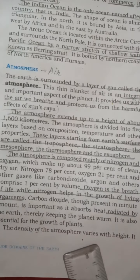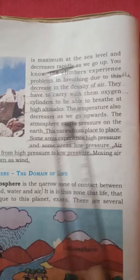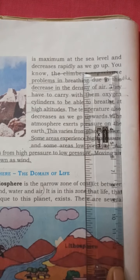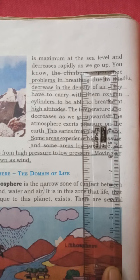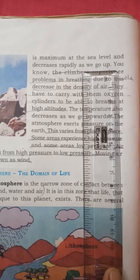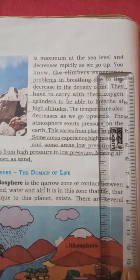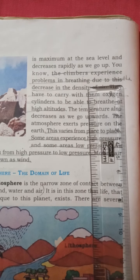The density of the atmosphere varies with its height. It is maximum at the sea level and decreases rapidly as we go up. As you go higher and higher, the air becomes lighter. Climbers experience problems in breathing due to the decrease in the density of air.